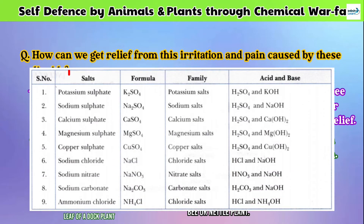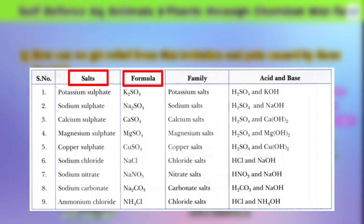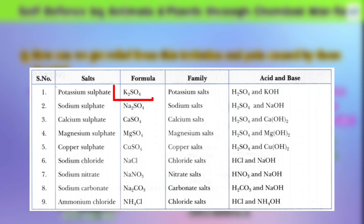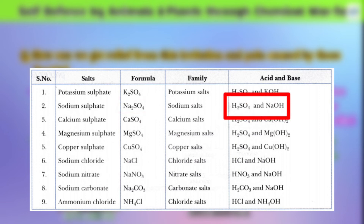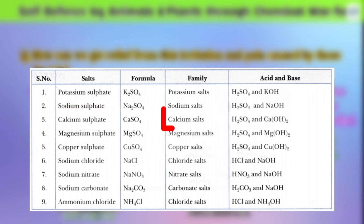Here are some more salts with their chemical formulas, and it is also given which salt belongs to which family. This depends on the acid and base that are combining. For example, potassium sulphate (K₂SO₄) belongs to the potassium salts family, and it is made by combining H₂SO₄ (an acid) and KOH (a base). Similarly, sodium sulphate (Na₂SO₄) belongs to the sodium salts family, and calcium sulphate (CaSO₄) belongs to the calcium salts family. The rest are given below — you can see them and understand them more clearly.